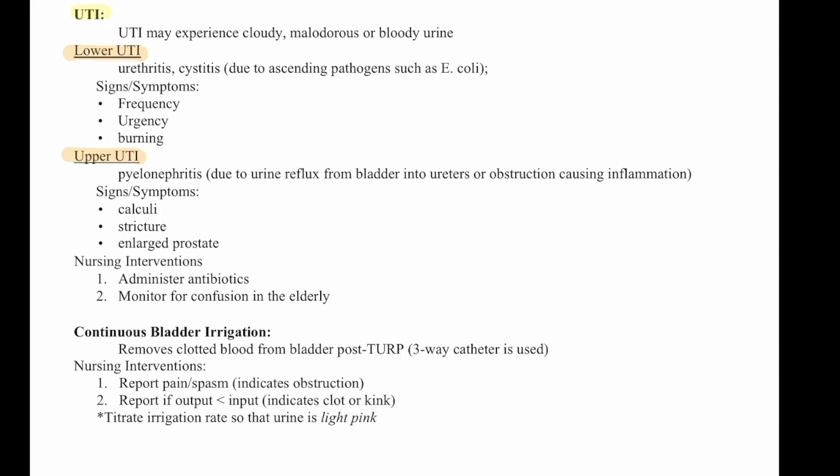Nursing interventions for UTIs include giving antibiotics and monitoring for confusion in the elderly, as elderly patients can become delirious with UTIs. Continuous bladder irrigation removes clotted blood from the bladder post-TURP using a three-way catheter. Report pain and spasms indicating obstruction, report if output is less than input indicating a clot or kink, and titrate irrigation rates so urine is light pink.